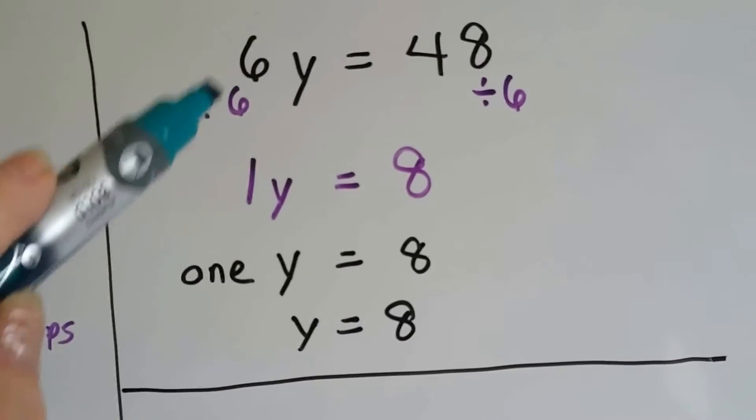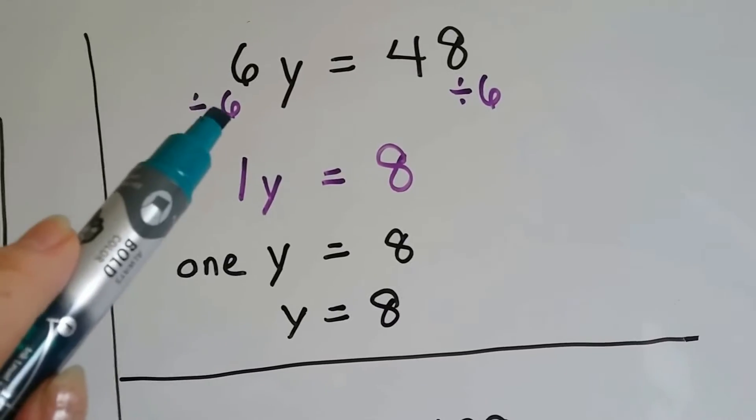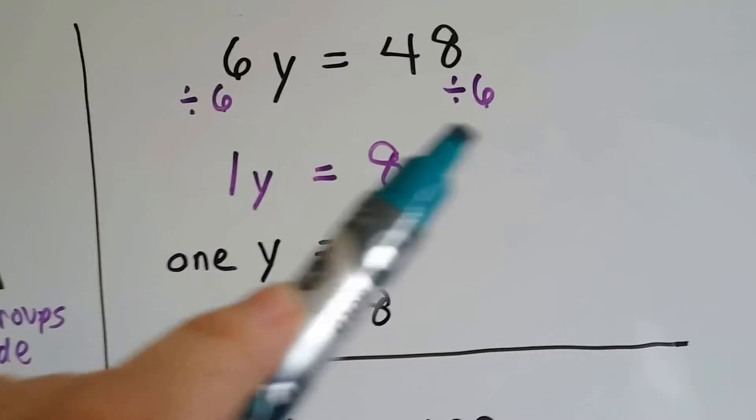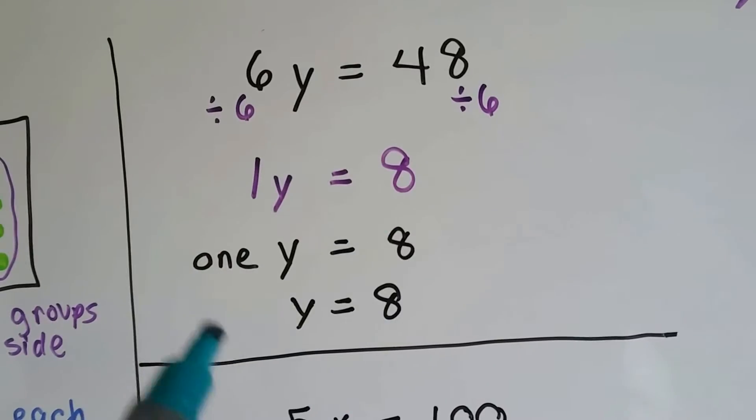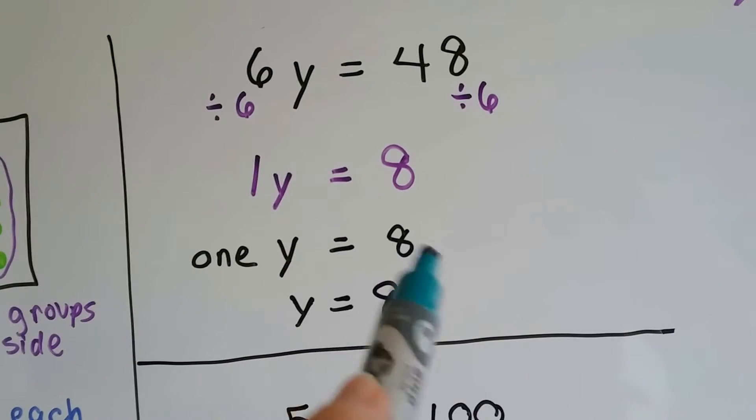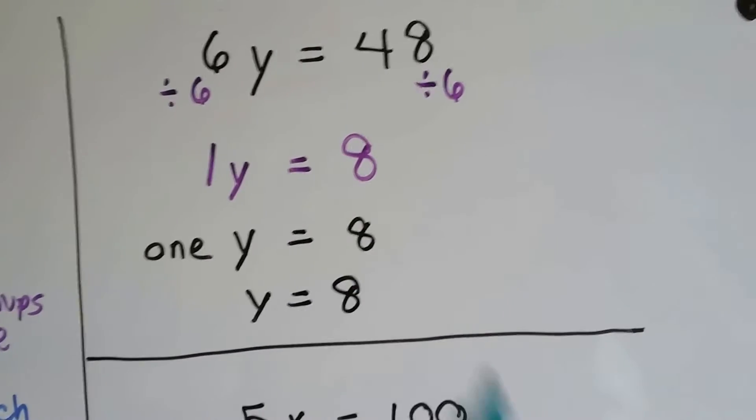So we're going to divide each side by 6 to get this y by itself. 6 divided by 6 is 1. 48 divided by 6 is 8. So now we've got 1y equals 8, or 1y equals 8. We don't need to write the 1. We know there's only 1 here, so y equals 8.